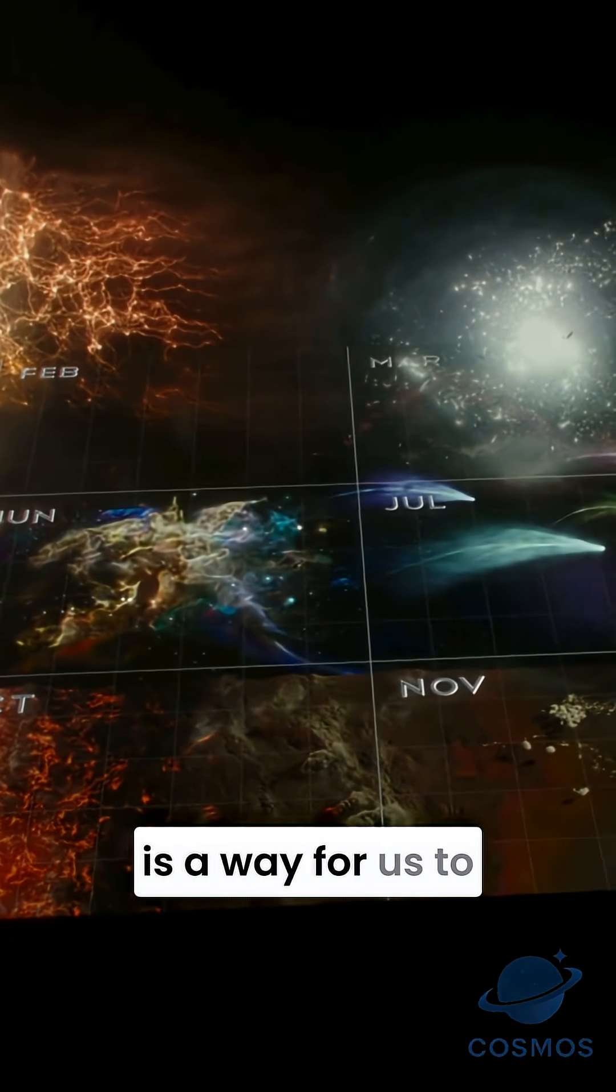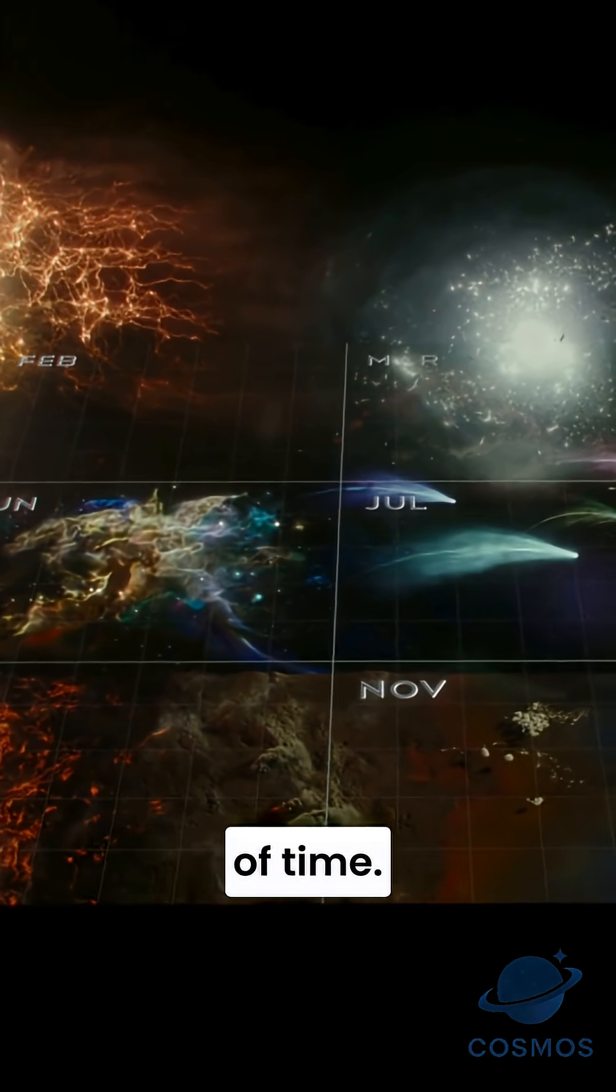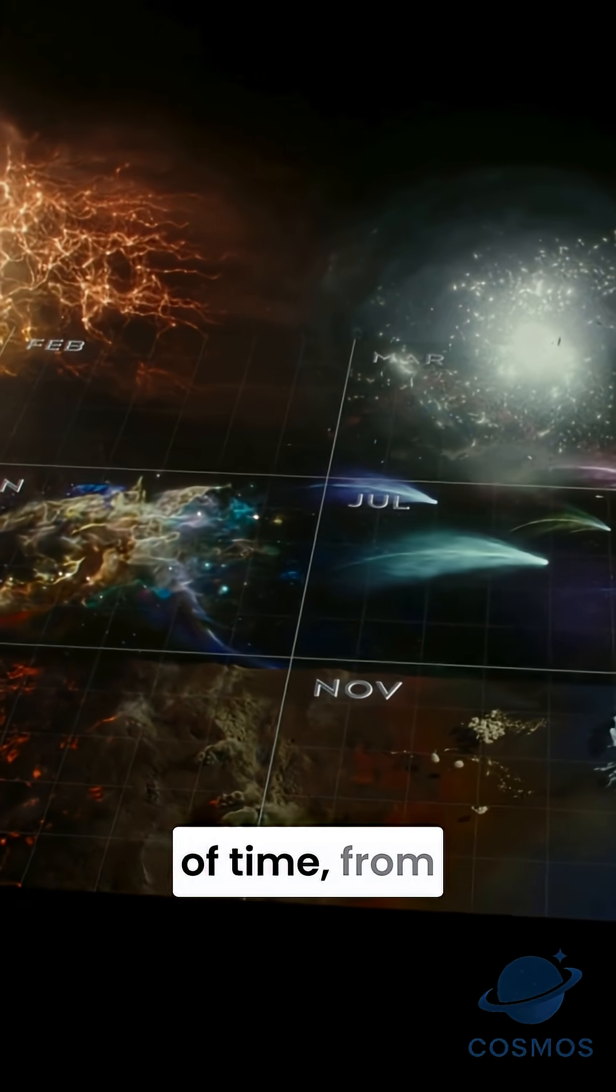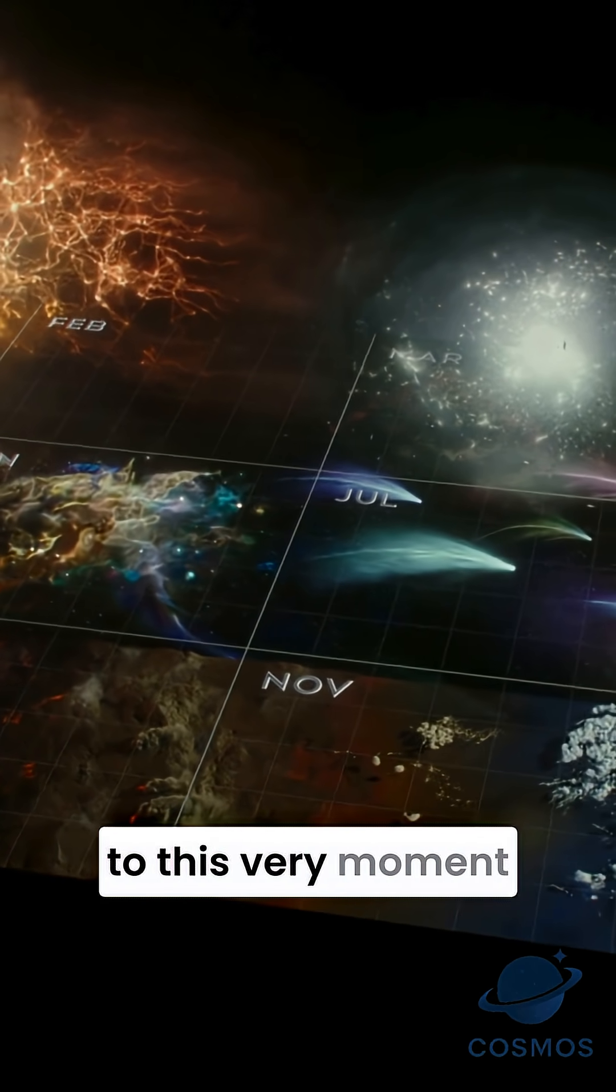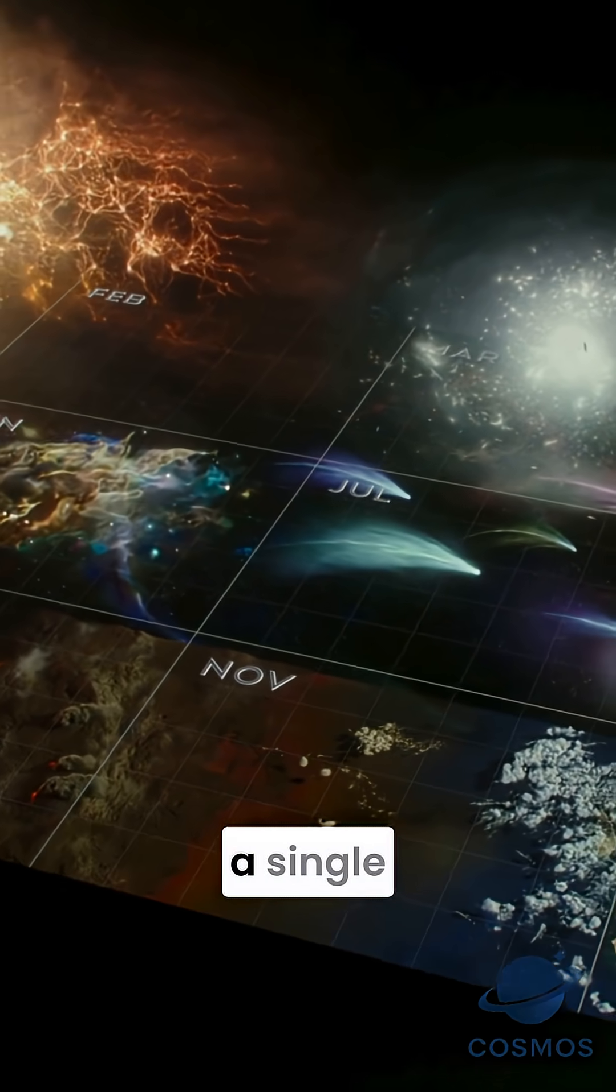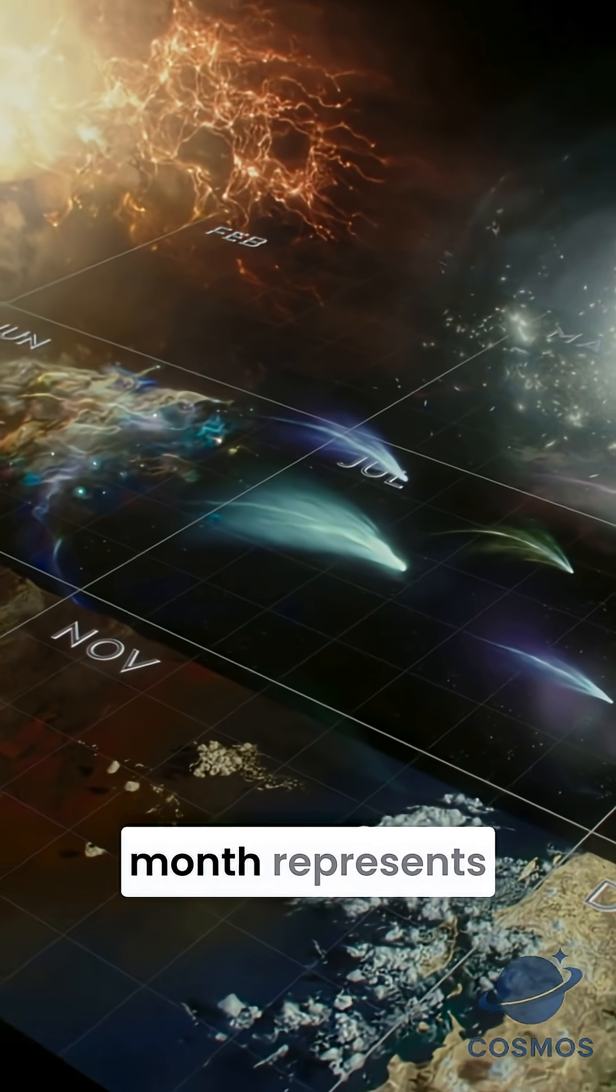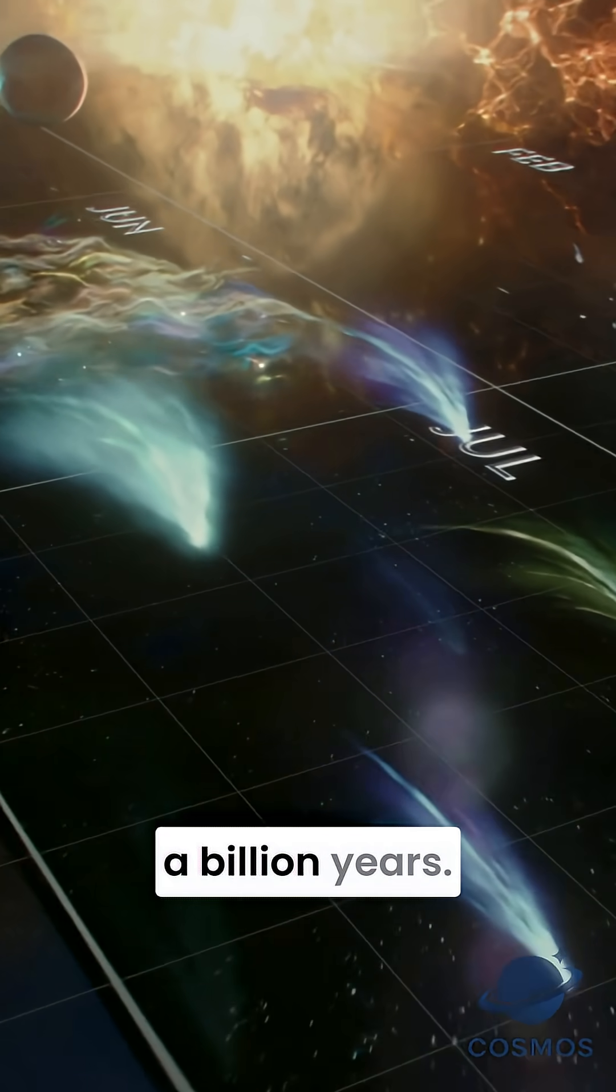The cosmic calendar is a way for us to grasp the vastness of time. We've taken all of time from the birth of the universe to this very moment and compressed it into a single calendar year. On this scale, every month represents a little more than a billion years.